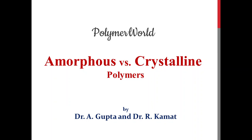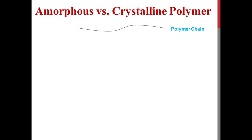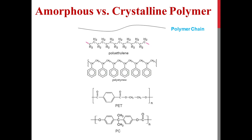In this video I am going to explain the difference between an amorphous polymer and a crystalline polymer. Polymers are long chain molecules comprised of small molecules known as monomers. For different polymers the monomers are different, and the different monomers lead to differences in chain rigidity and intermolecular chain interaction.